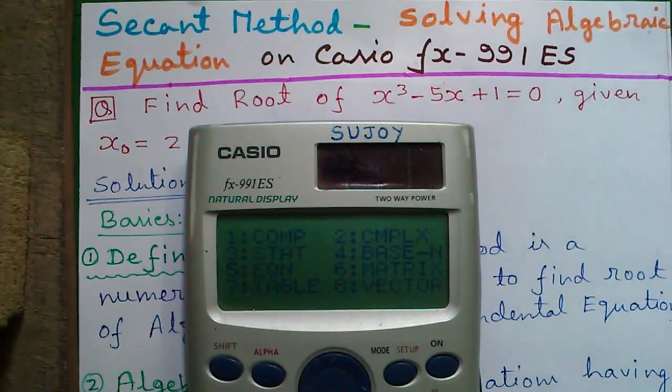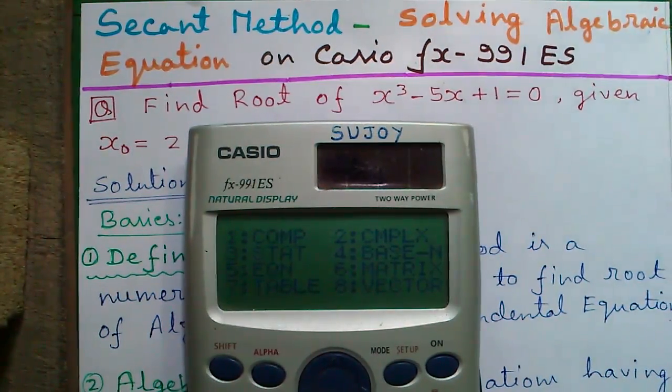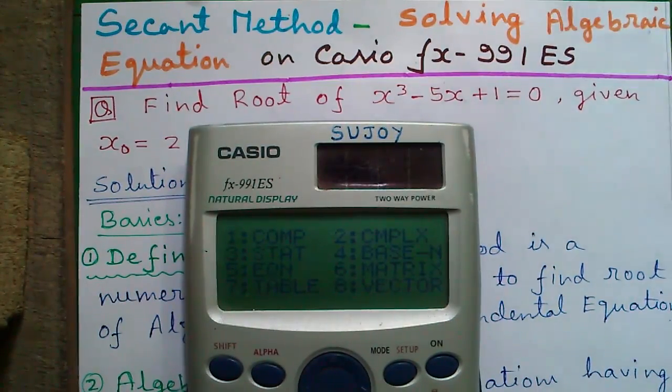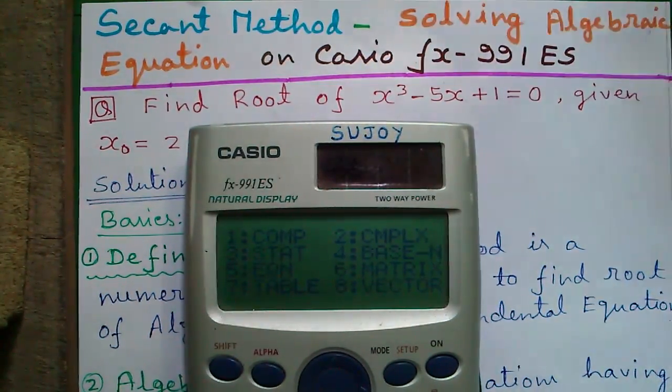Number one, some basics and definitions about secant method, algebraic equation, transcendental equation and roots. Number two, how to find out root of an algebraic equation by secant method on Casio FX-991ES calculator.